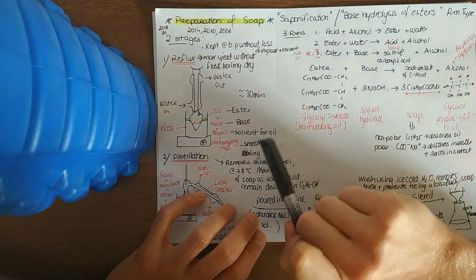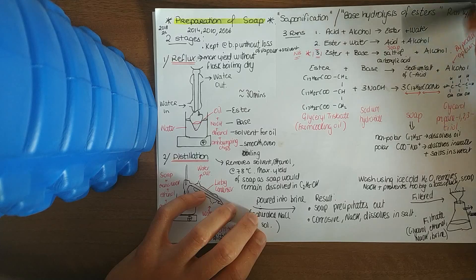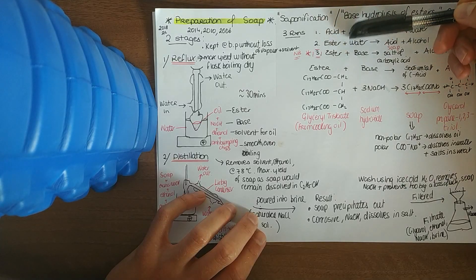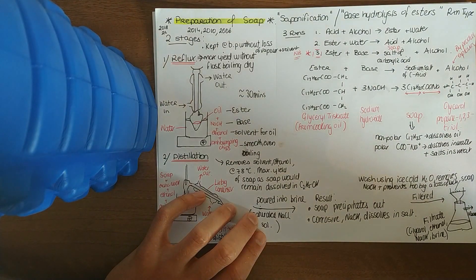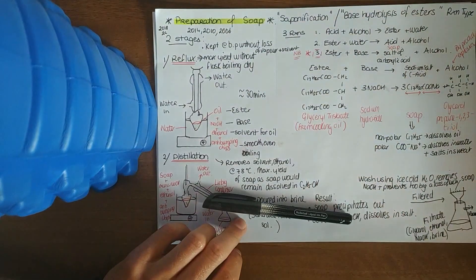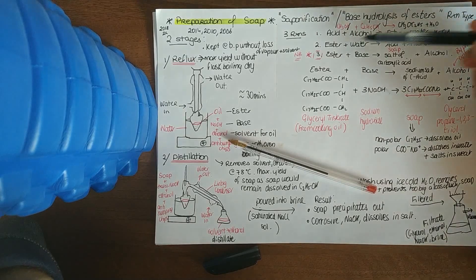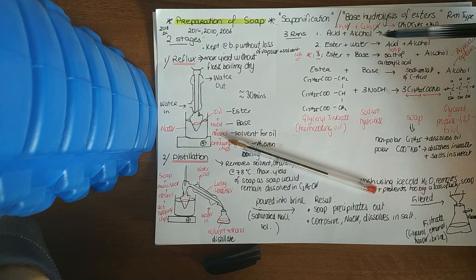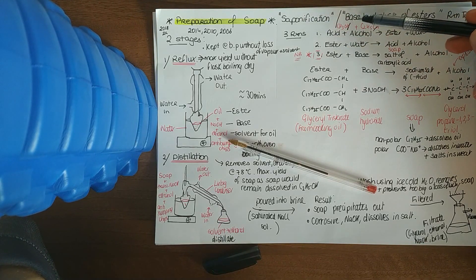In the process of making soap, you use base hydrolysis of esters. For the family of esters, you would have studied three reaction mechanisms and they're all hugely important. The first one being your acid and your alcohol giving you your ester and water. The next one is just the reverse: ester and water giving you your acid and alcohol. And then this one here, your base hydrolysis of esters. Your base here reacts with your ester.